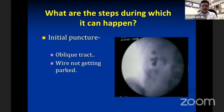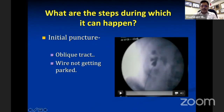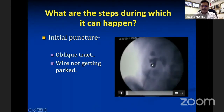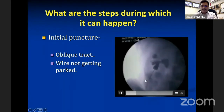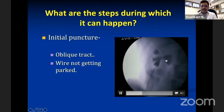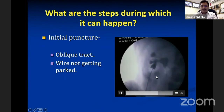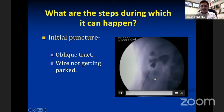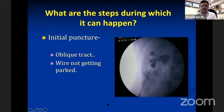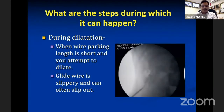Track loss can happen when your initial tract is oblique and the wire is not getting parked. In this video, you can see the anterior calyx and the posterior calyx — the puncture has been made into the anterior calyx and the wire is going along an oblique tract. This wire is inherently not stable. In the initial learning curve, one should avoid dilating an oblique tract and ensure the tract is straight.